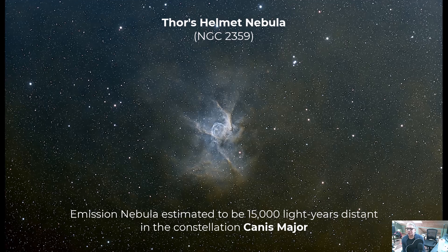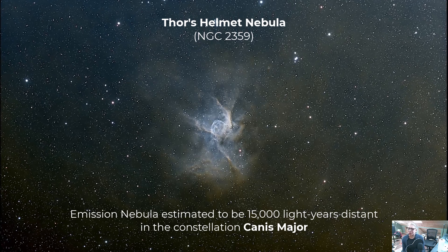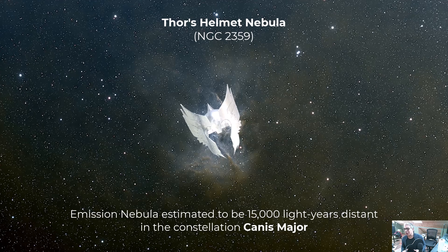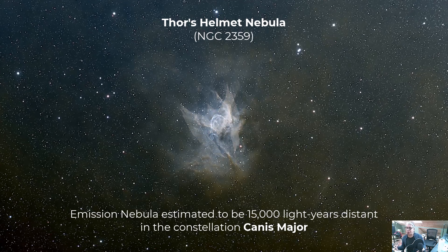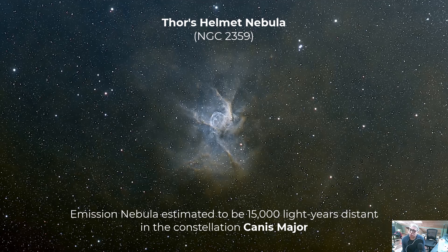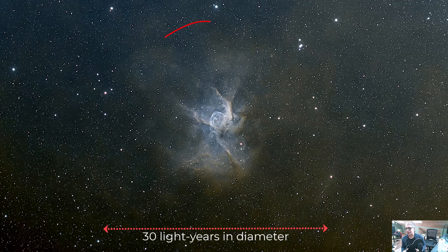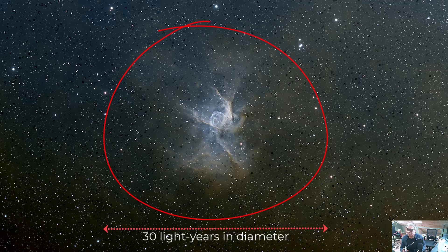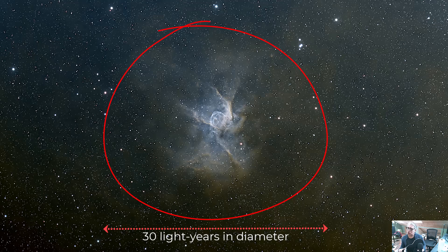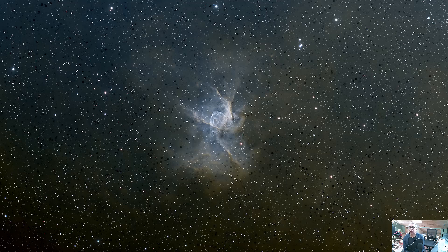The nebula gets its name from its distinctive shape which resembles the winged helmet of the Norse god Thor. It's about 15,000 light years away from Earth and it's roughly 30 light years in diameter. That includes the bright area as well as some of the dark nebula that surrounds that illuminated region.